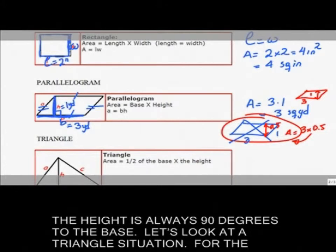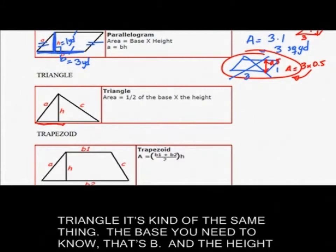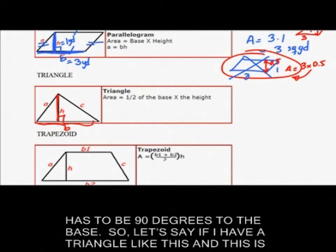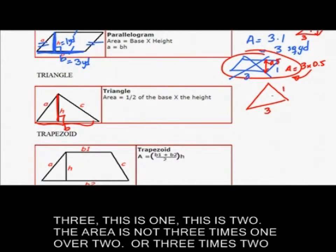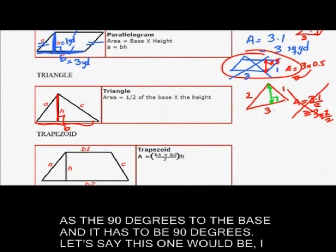Let's look at a triangle situation. For the triangle it's kind of the same thing. The base you need to know that's B and the height has to be 90 degrees to the base. So let's say if I have a triangle like this and this is 3, this is 1, this is 2, the area is not 3 times 1 over 2 or 3 times 2 over 2, none of that. That would be all wrong.